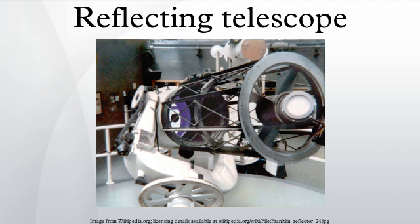Reflecting Telescopes come in many design variations and may employ extra optical elements to improve image quality or place the image in a mechanically advantageous position. Since Reflecting Telescopes use mirrors, the design is sometimes referred to as a catoptric telescope.